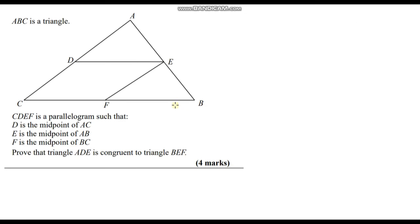I'm going to go through one more question — again, pause the video and see if you can have a go first. ABC is a triangle. CDEF is a parallelogram such that D is the midpoint of AC, E is the midpoint of AB, and F is the midpoint of BC. We need to prove that triangle ADE is congruent to triangle BEF.